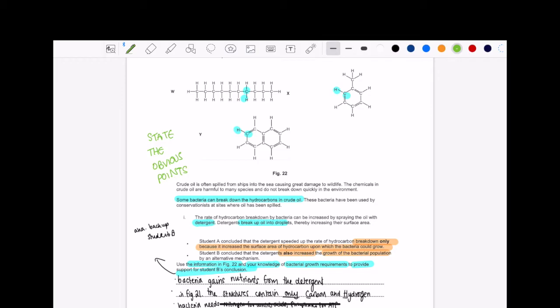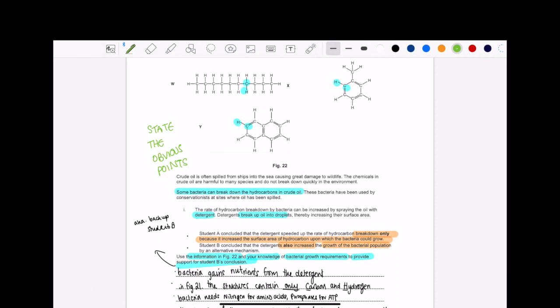You just want to stand back and see it for how it is. That's such a good tip even for any question, really. If you ever get stuck, just calm down. Just sit back on your chin and look at it for what it is. Here we have crude oil. Crude oil has been sprayed with detergent. Why bacteria can take it up more easily? Student A is saying, yeah, it's just because of the increased surface area that bacteria can grow from it. But actually student B is saying, do you know what? This detergent actually helped the bacterial population to grow. So the question really says, use the structures in figure 22 and what you've learned in class to talk about why this detergent has increased the growth of the bacterial population.